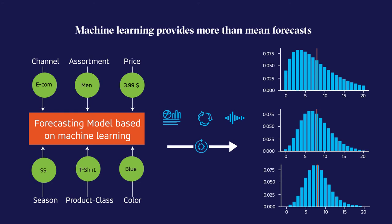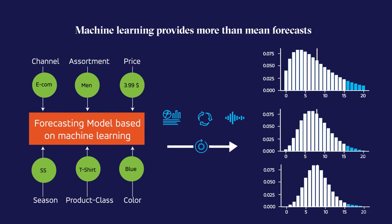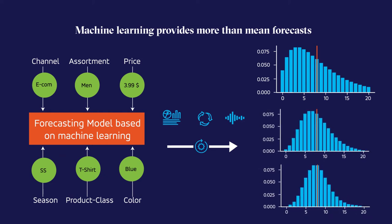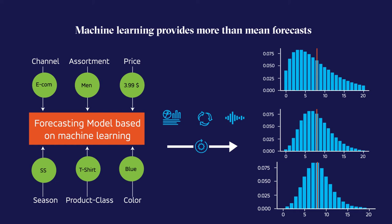In this way, we not only know that the mean demand for the product is 8, but also the probability of selling 1, 7, 12, or 14 pieces. In this example, there are 3 different histograms that all correspond to the same mean value, but the width of the histograms indicates the uncertainty of the forecast. On the top example, there's a high probability of selling less than 5 or more than 50 pieces. In the last example, the distribution is quite narrow, and the probability of selling an amount far away from the mean is much less probable. Thus, the machine learning algorithms provide an input reflecting the certainty or the uncertainty of the forecast.